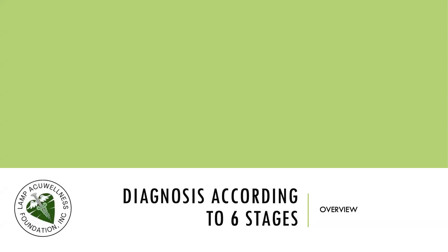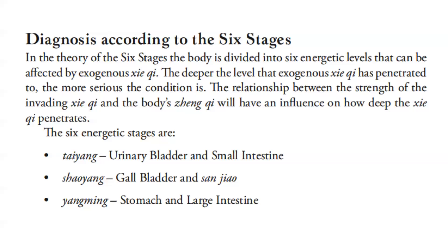Let's now talk about diagnosis according to six stages, an overview. In the theory of the six stages, the body is divided into six energetic levels that can be affected by exogenous pathogenic chi. The deeper the level that exogenous pathogenic chi has penetrated to, the more serious the condition is. The relationship between the strength of the invading pathogenic chi and the body's zheng chi will have an influence on how deep the pathogenic chi penetrates.